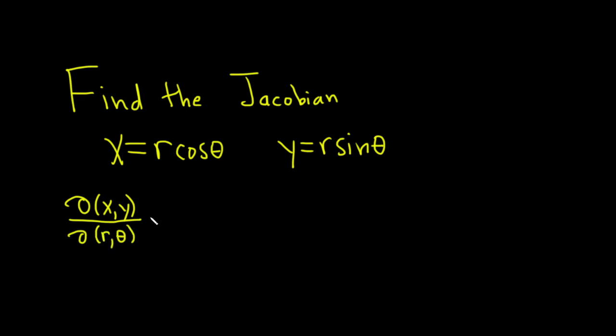And there's a convenient mechanism to memorize it. Basically you take your first variable and you take the partials with respect to r and theta and that goes in the top row. So it'll be del x del r, del x del theta.